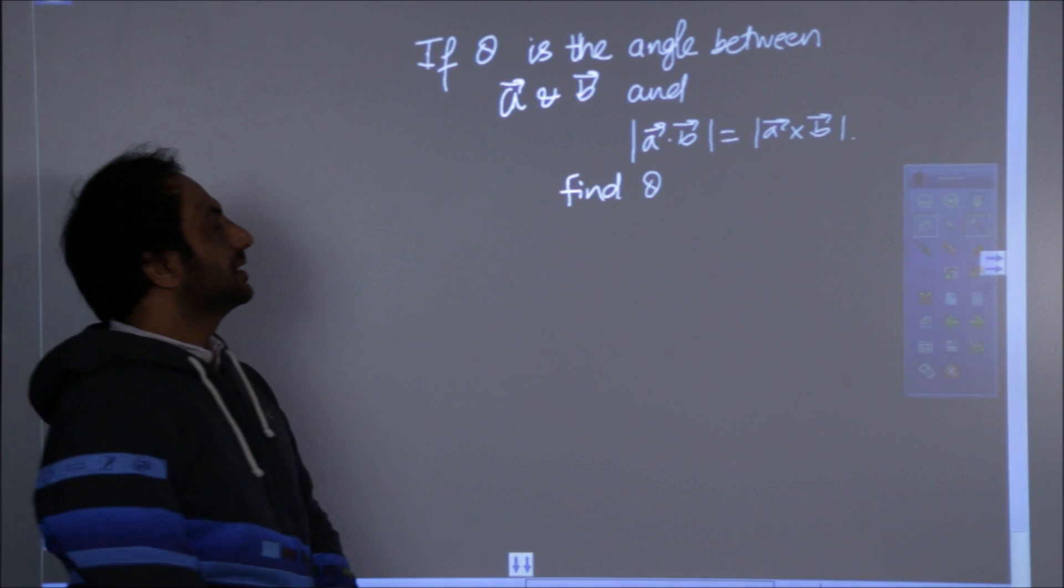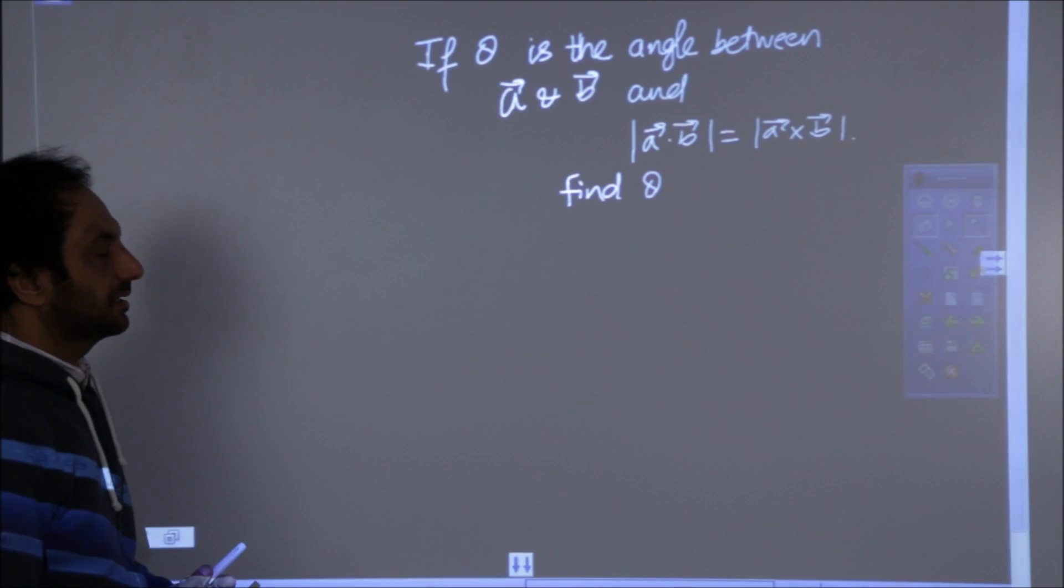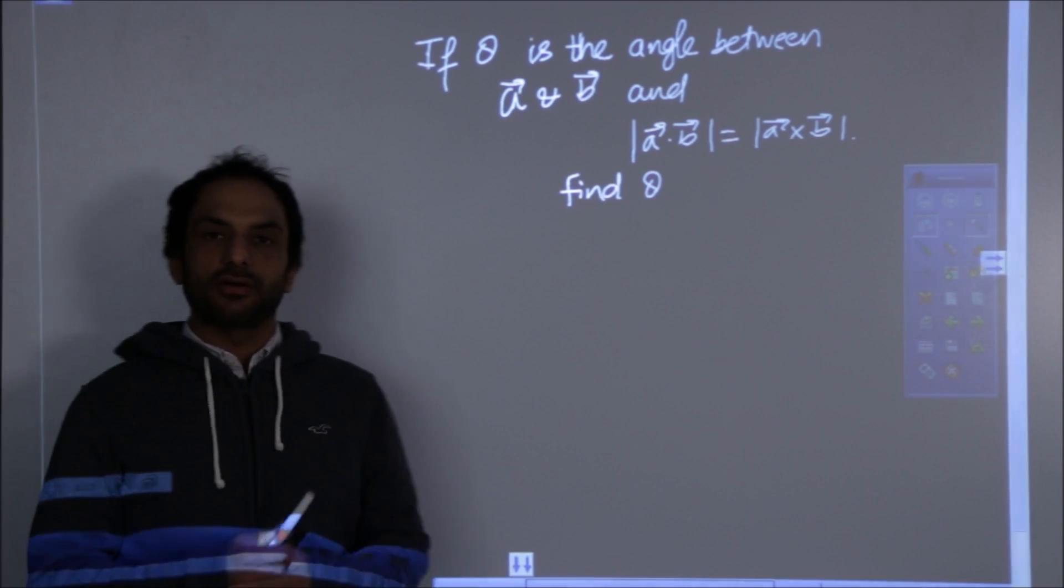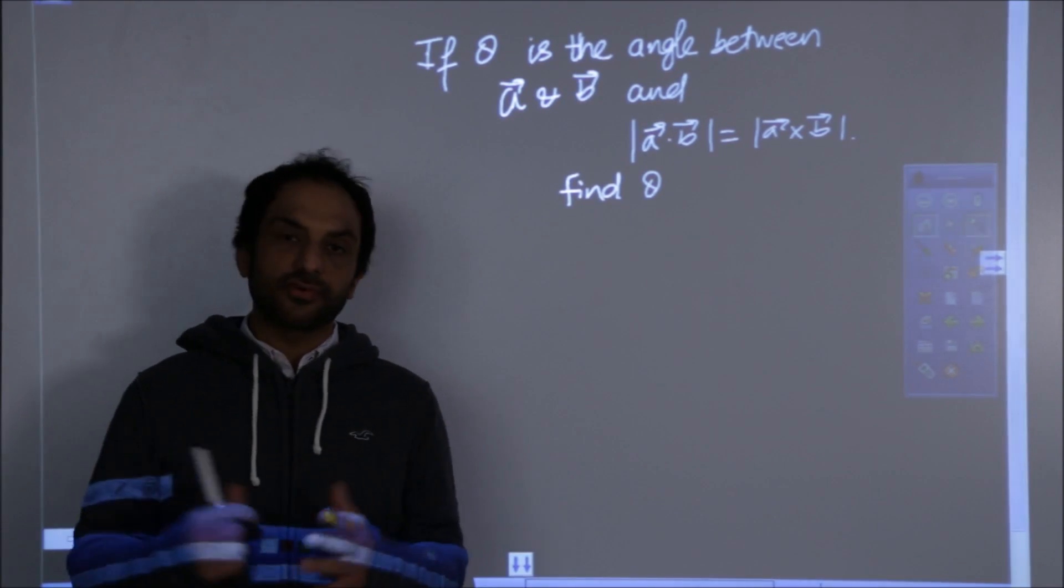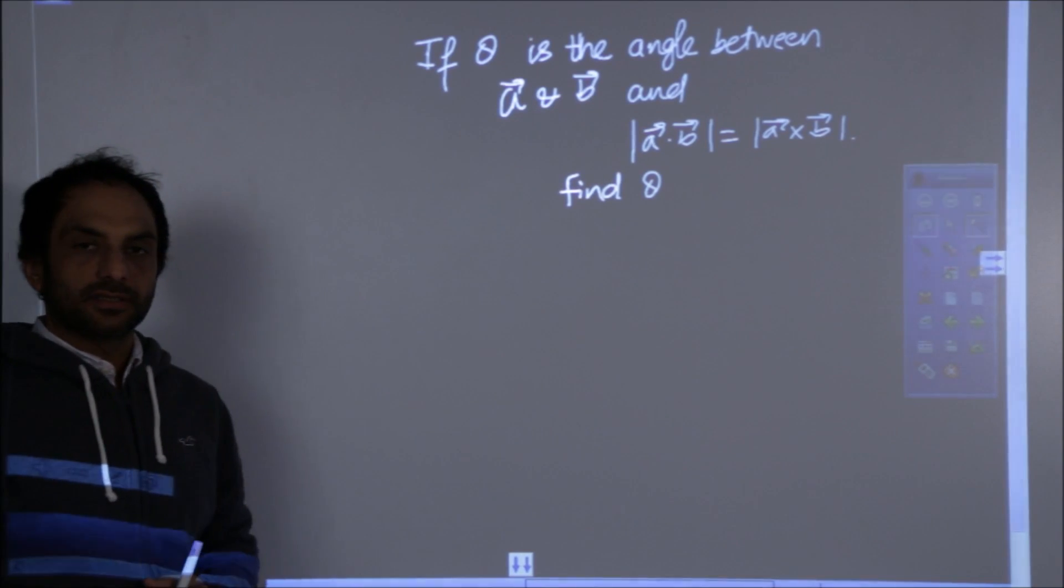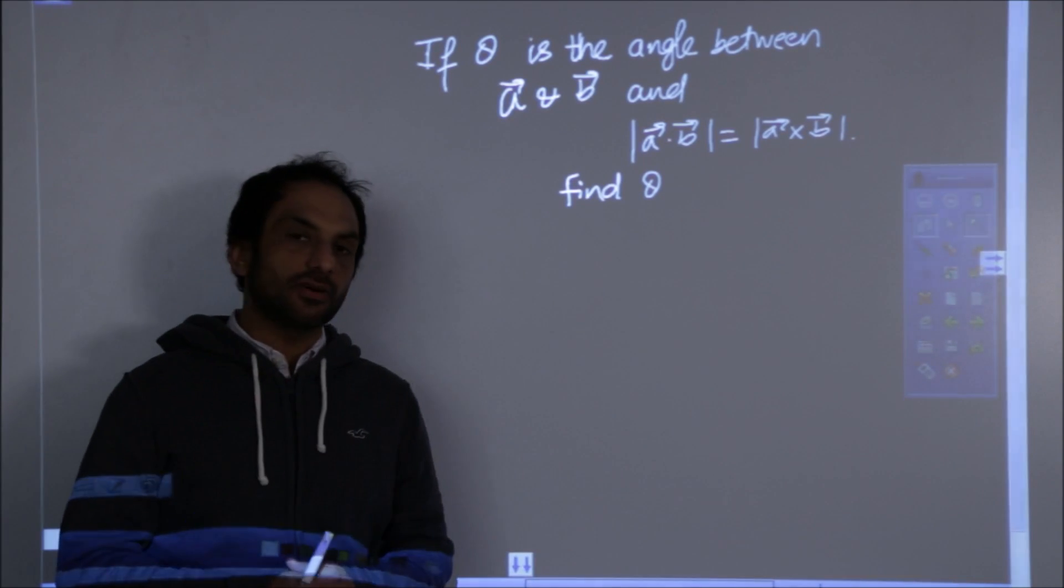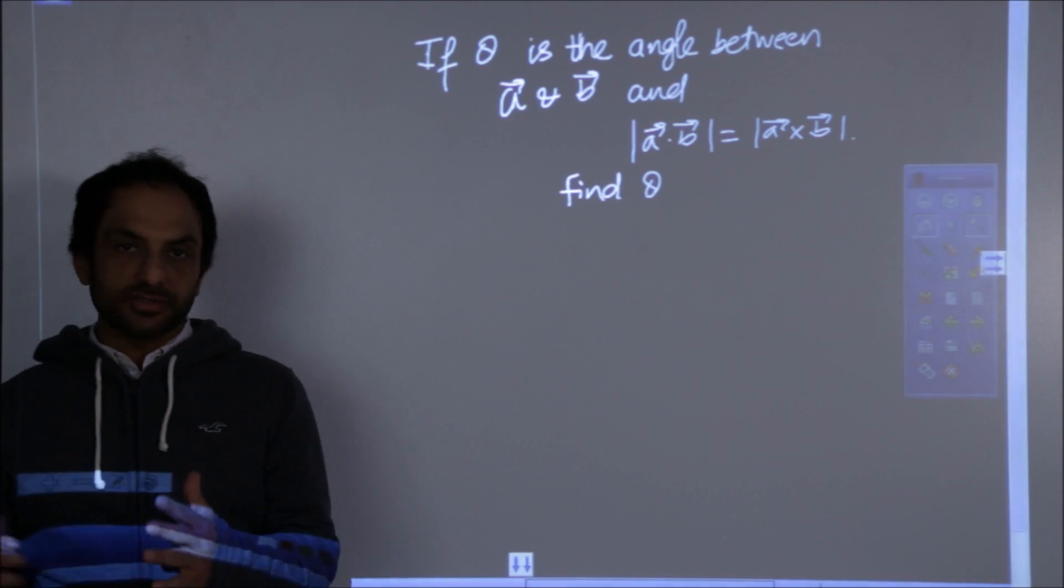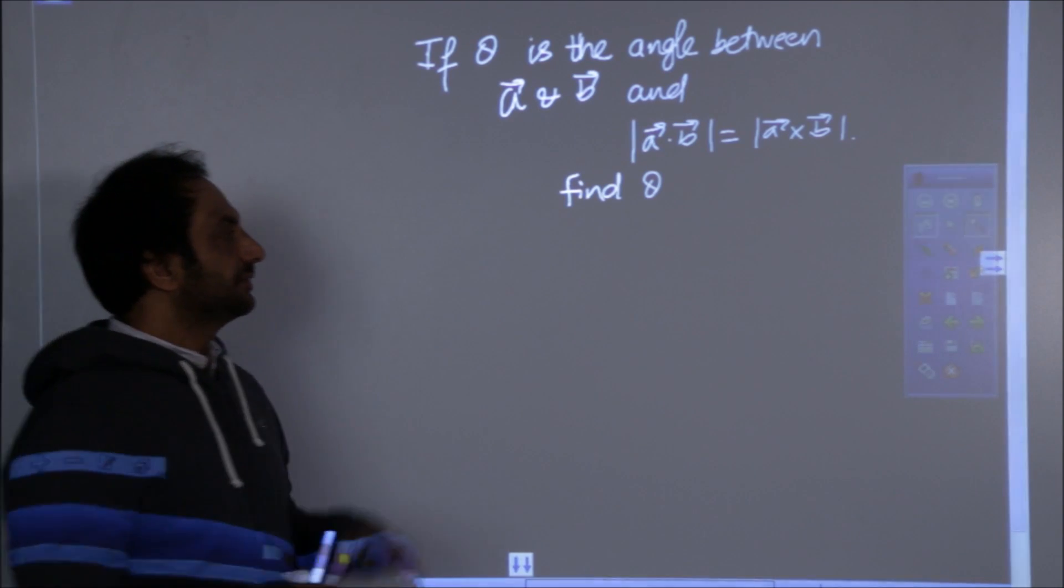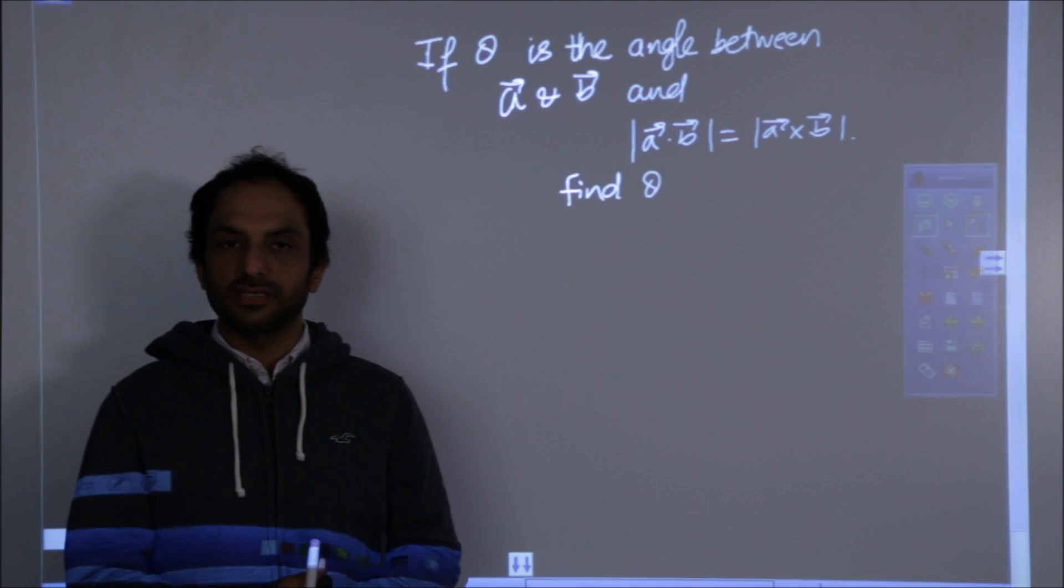If theta is the angle between the two vectors a and b and mod of a dot b is equal to mod of cross product, that is modulus of dot product is equal to the modulus of the cross product, find theta. The target is to find theta.